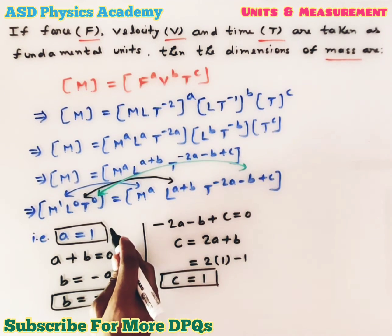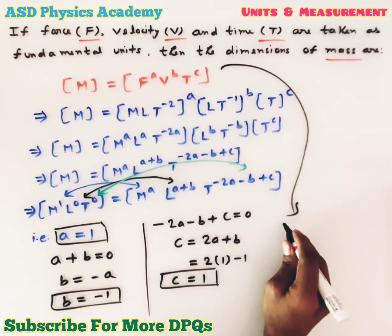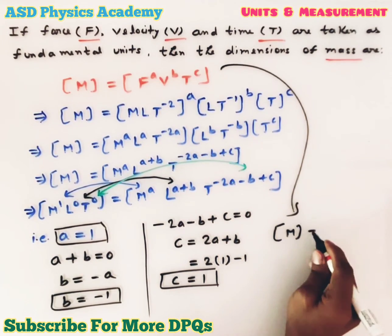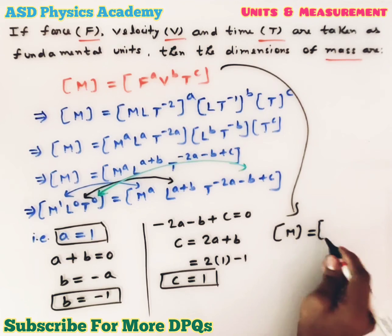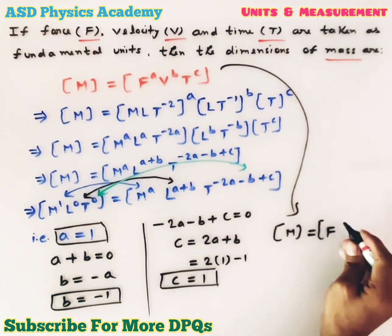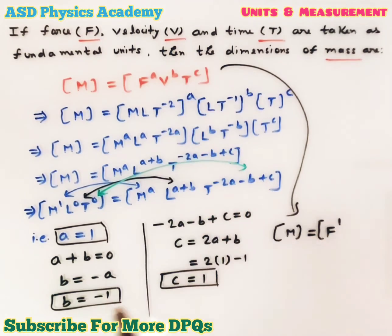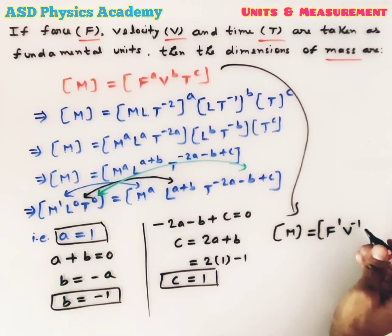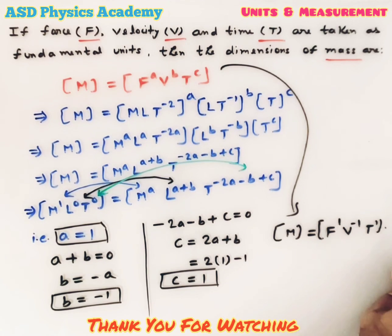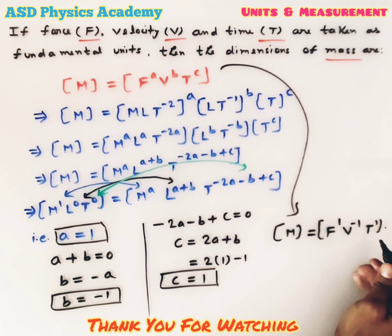After getting the values of A, B, and C, we substitute back: M equals F to the power A, which is 1, so F¹; V to the power B, which is −1, so V⁻¹; and T to the power C, which is 1, so T¹. This is the dimension of mass in terms of force, velocity, and time: M = F V⁻¹ T.